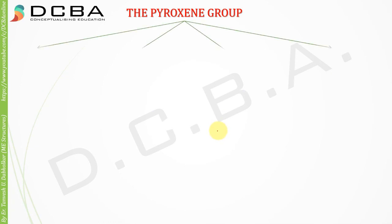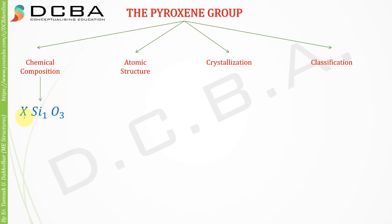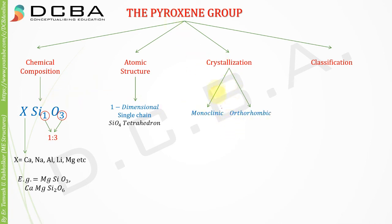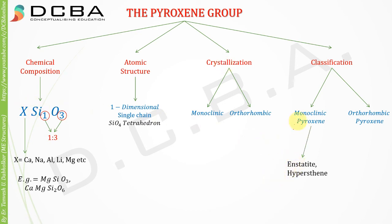Moving on to the pyroxene group. The chemical composition is XSiO3, where silicon and oxygen are always in the ratio of 1:3, and X can be calcium, sodium, aluminium, lithium, magnesium, etc. The atomic structure is a one-dimensional single chain as we already saw. Crystallization is monoclinic or orthorhombic. Classification is monoclinic pyroxene and orthorhombic pyroxene. Examples for orthorhombic pyroxene are enstatite and hypersthene, and for monoclinic pyroxene augite and diopside.